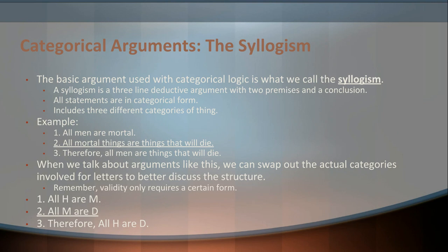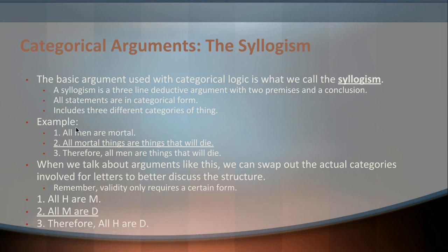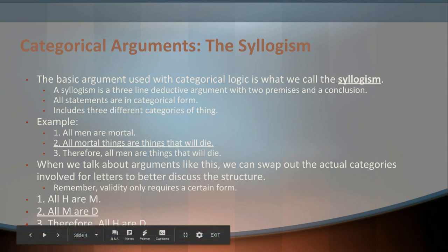There are different ways we can label and break down its structure, and different rules for constructing valid syllogisms — ones that will reliably take us from true premises to true conclusions. Because we're worried about validity — that is, figuring out valid deductive relationships — we can strip away a lot of the details and reduce the argument down to just a skeleton. We can swap out the particular categories involved, like men, mortal things, things that will die, and replace them with letters so we can more easily see the structure.